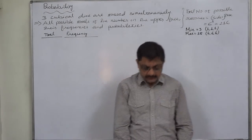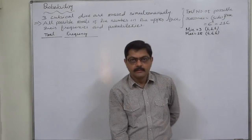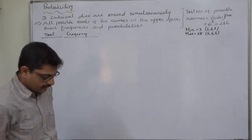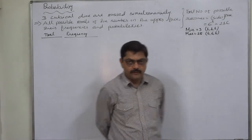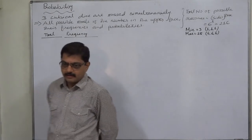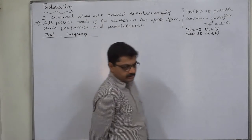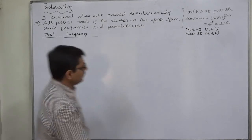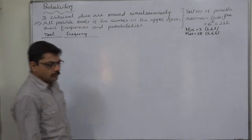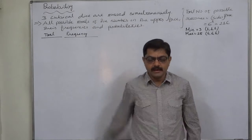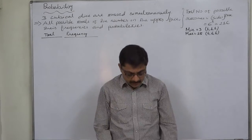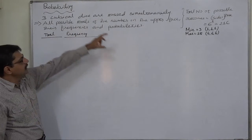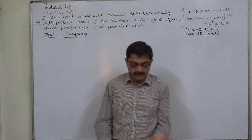Hello and welcome. This time we are going to discuss a very special, very interesting problem in probability. Many students are demanding some shortcuts for this kind of problem. The problem is: three cubical dice are tossed simultaneously. In this lecture we are interested in all possible totals of the numbers on the upper face.